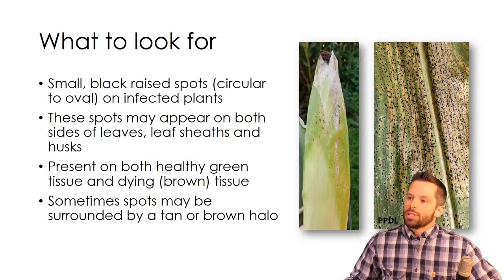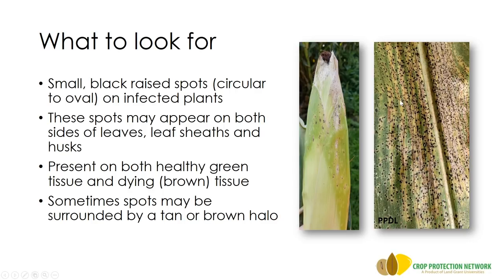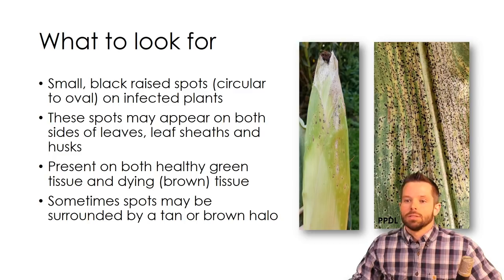Here are some more signs and symptoms of this particular disease. You can again see these small black raised structures, which are actually called stromata. These are the reproductive structures of this particular fungus. These can affect all the green material on the plant, including the husks. And in some cases, in severely affected fields, we have observed the tar spots on the stalks as well.